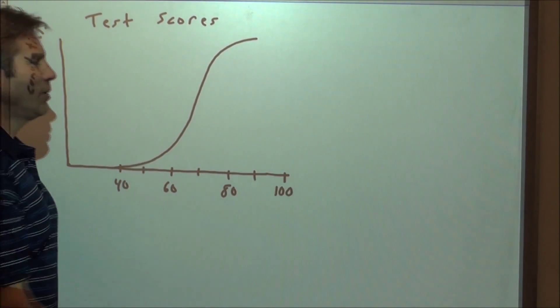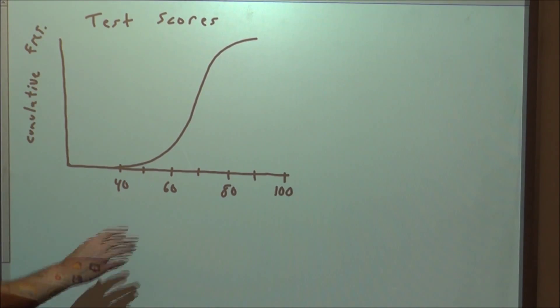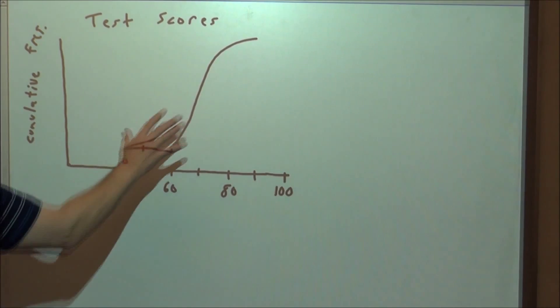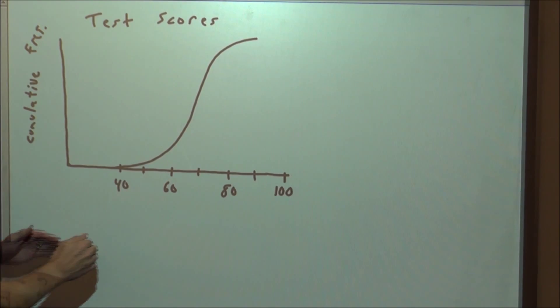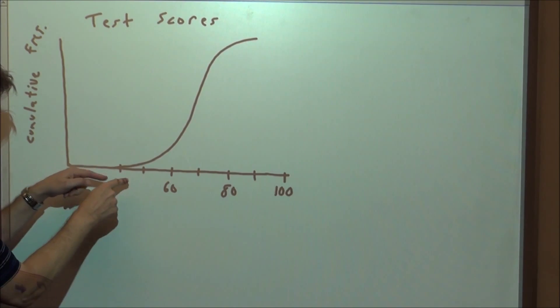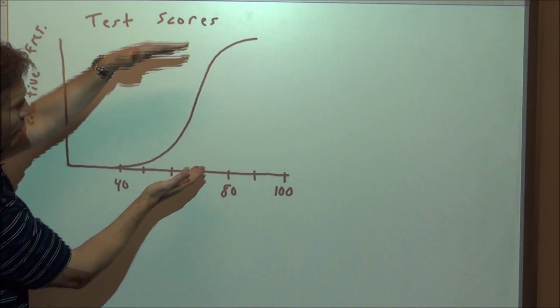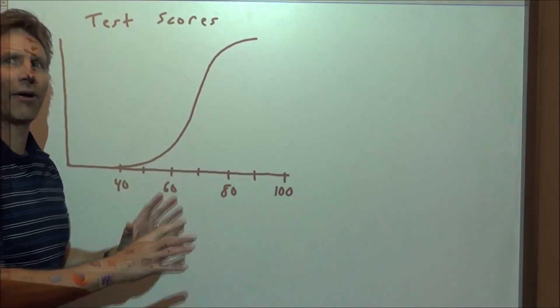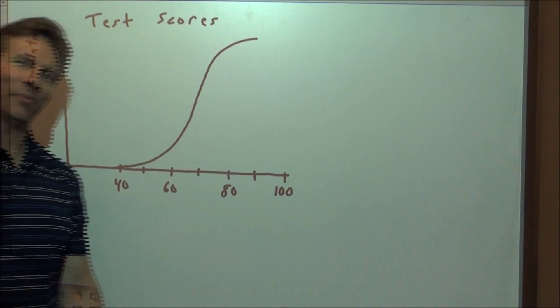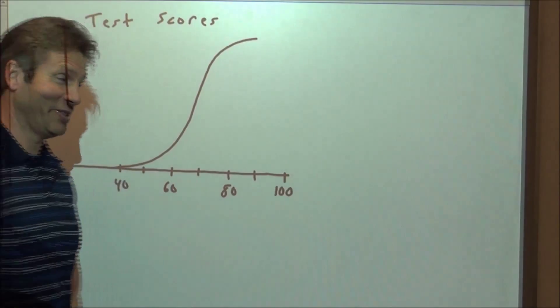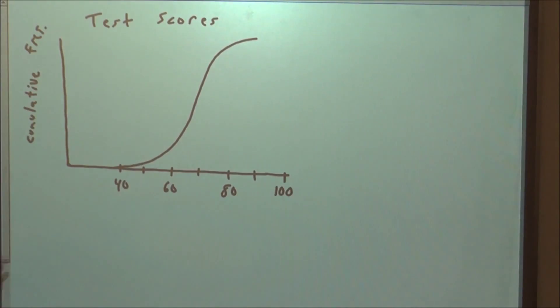Then we get this thing called a cumulative frequency distribution. And what happens is this might be a set of test scores, and as soon as you get a score show up, the lowest score, we start to gain some frequency. And the frequency builds until we've accounted for all the scores. That should make almost no sense to you the first time. Let's look at this a little bit more carefully.